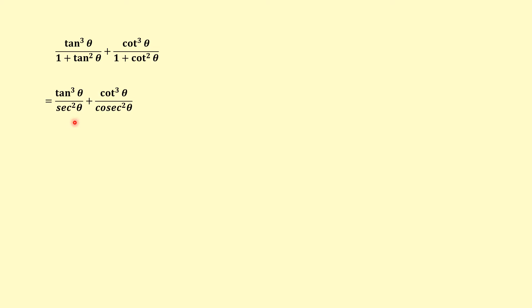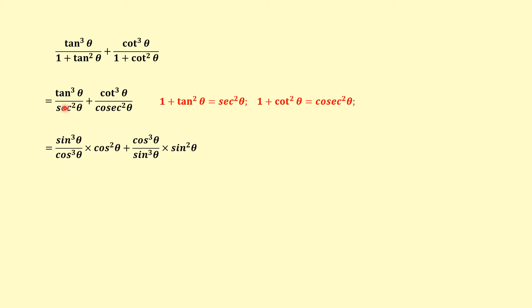The left hand side is tan³θ upon (1 + tan²θ). We know that 1 + tan²θ equals sec²θ. Since tanθ equals sinθ/cosθ, tan³θ equals sin³θ/cos³θ. And sec²θ is the reciprocal of cos²θ, so we multiply accordingly.